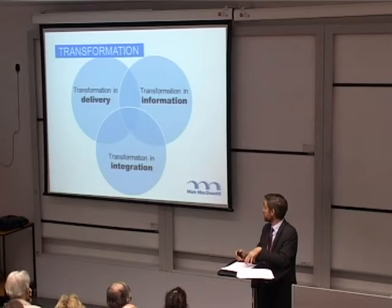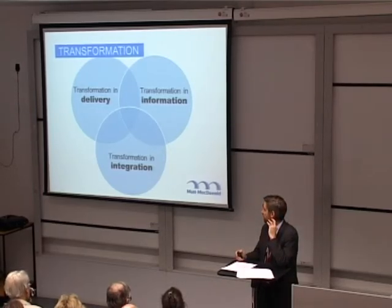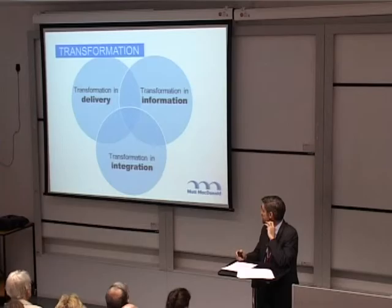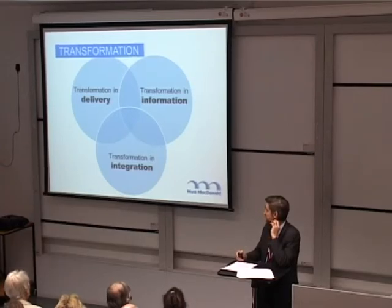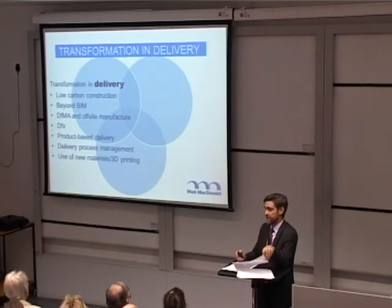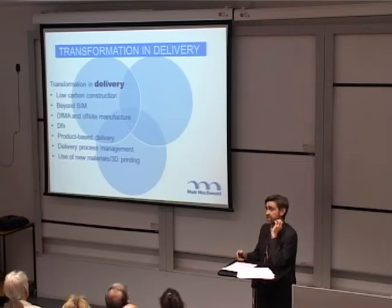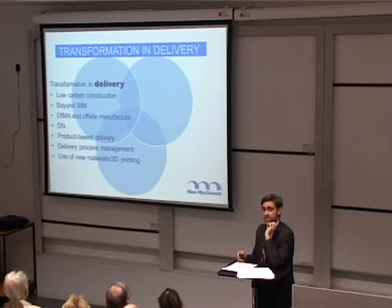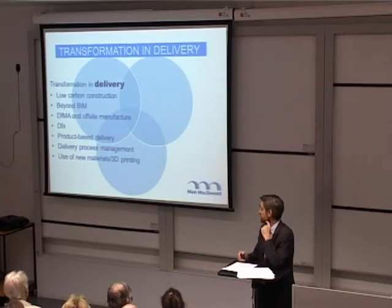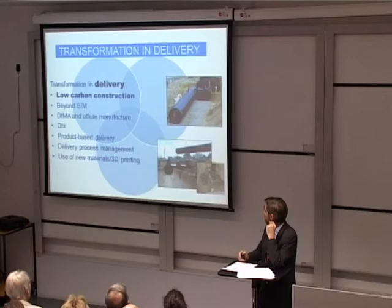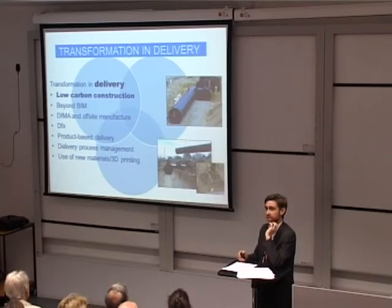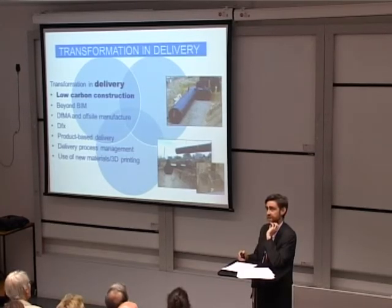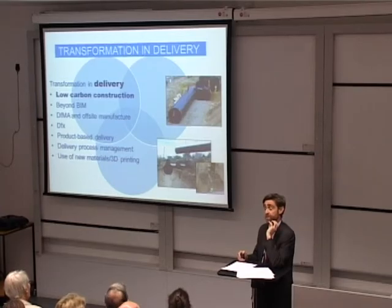I'll scoot through fairly fast — I'd love to go into more detail but there isn't time. There are areas where we can see potential transformation delivering outcomes per pound for the ultimate customer, coming under the headings of transformation in delivery and transformation in integration and information. In delivery, here's low carbon construction as an example — a very simple one. The traditional way of putting a pipe in the ground: you dig a big hole, put some bedding, put the big pipe in, and import a whole load of fill. But by doing a simple carbon map, it's fairly obvious the carbon was in digging the hole and importing material.